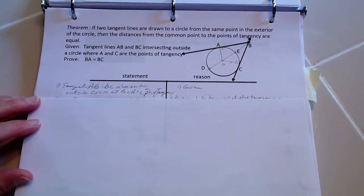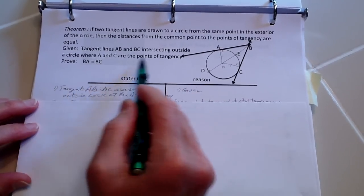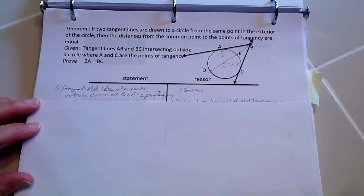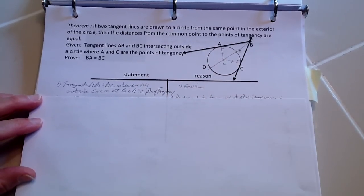I'll do a restatement of the given, which we have here: the tangent lines intersecting outside, where the points of tangency are A and C.